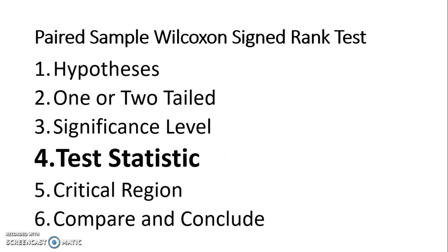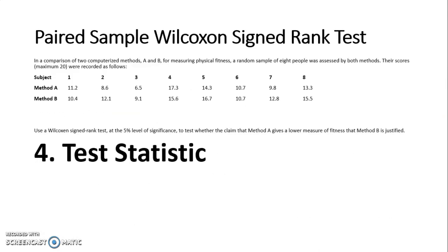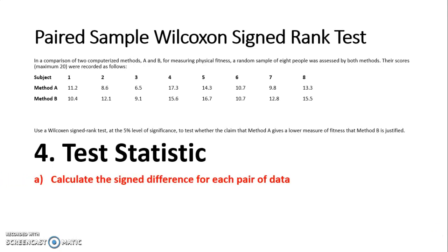Then comes the test statistic — this is worth the most marks. To work out the test statistic for a paired sample Wilcoxon signed rank test, we follow four steps. Step one is to work out the signed difference for each pair of data using A minus B. So: positive 0.8, negative 3.5, negative 2.6, positive 1.7, negative 2.4, zero (they're the same), negative 3, and negative 2.2.